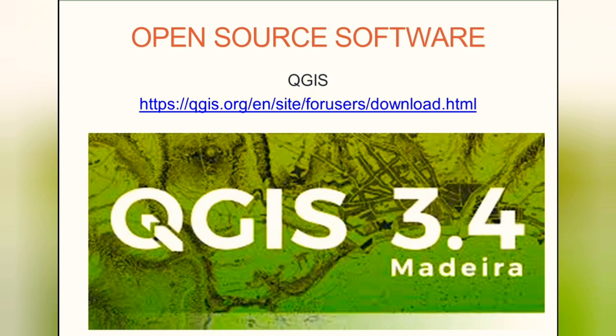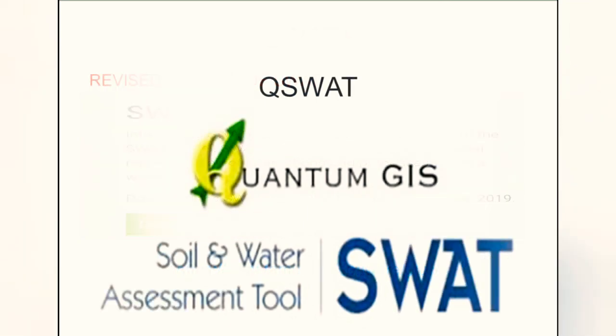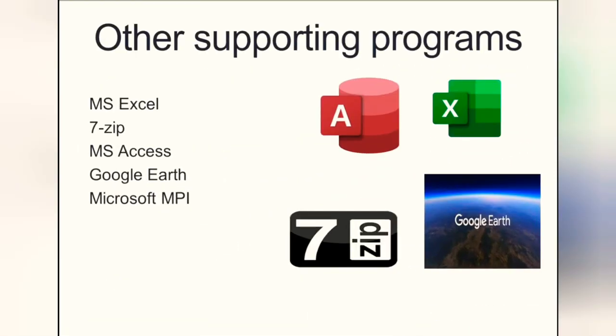For this presentation we'll be using open source software available to everyone. The first is QGIS, another is SWAT+, which is a revised version of SWAT, and we'll also be using QSWAT, which is the Soil Water Assessment plugin in QGIS. Other supporting programs include Microsoft Excel, Google Earth, Microsoft Access, and the SWAT model user interface.